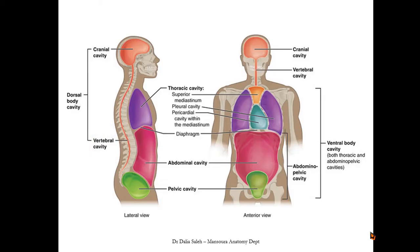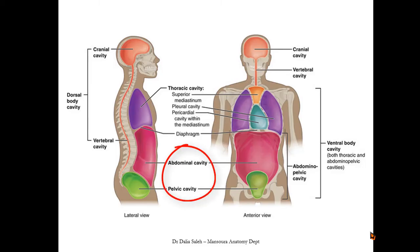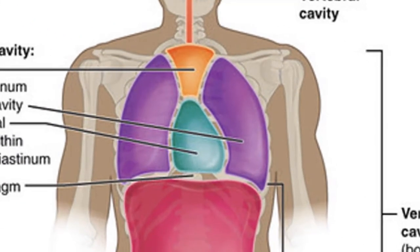Near the front of the body we have the ventral cavity, which is further subdivided into the thoracic cavity within the thorax and the abdominopelvic cavity inside the abdomen and pelvis. These are separated from each other by the diaphragm. The thoracic cavity is further subdivided into the pericardial cavity in the middle of the thorax,